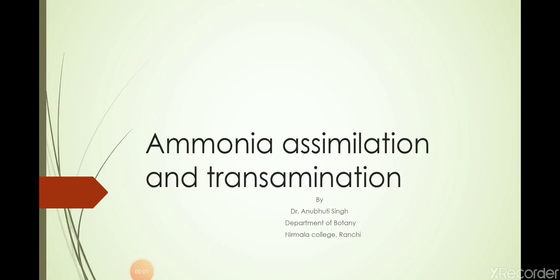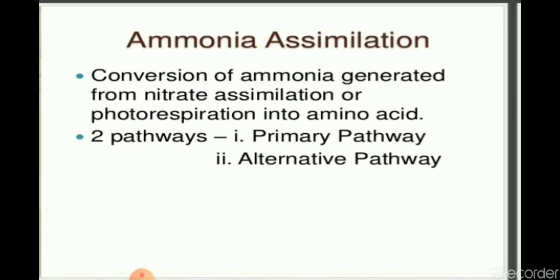Good morning. Today we discuss ammonia assimilation and transamination, which is the last topic of nitrogen metabolism. Ammonia assimilation is defined as the incorporation of ammonia into organic compounds, including the formation of amides and amino acids from keto acids and nitrates. There are two pathways by which assimilation of ammonia takes place: the primary pathway and the alternative pathway.